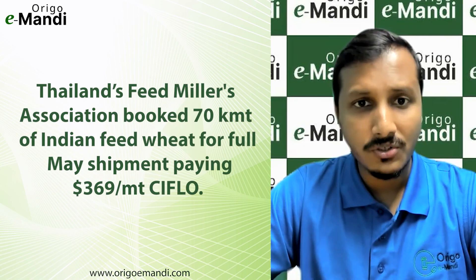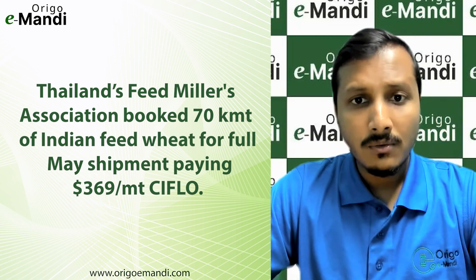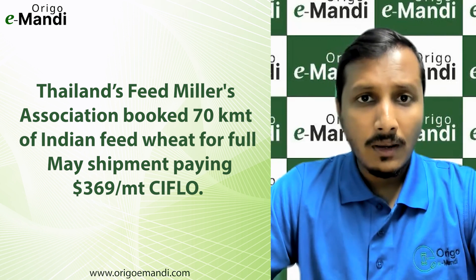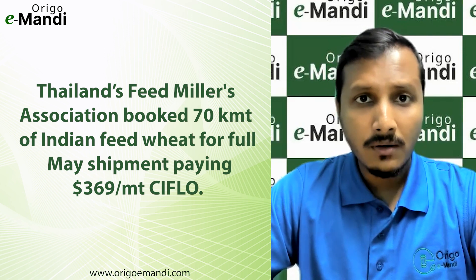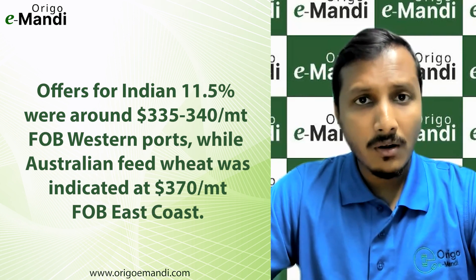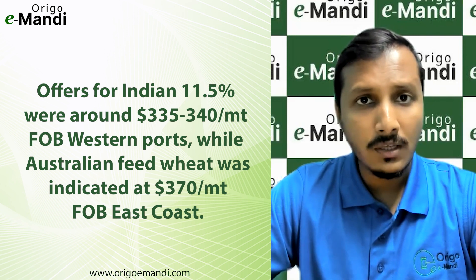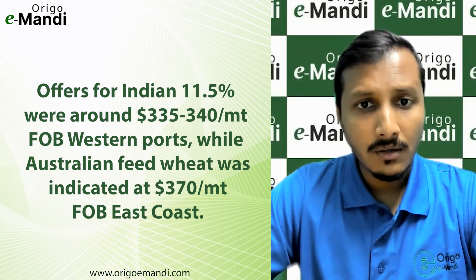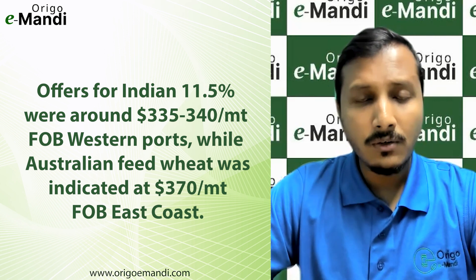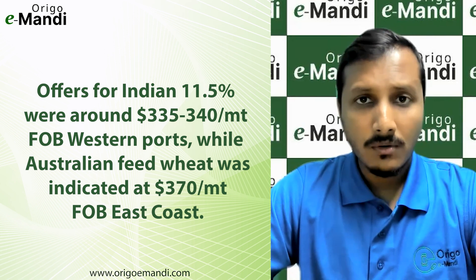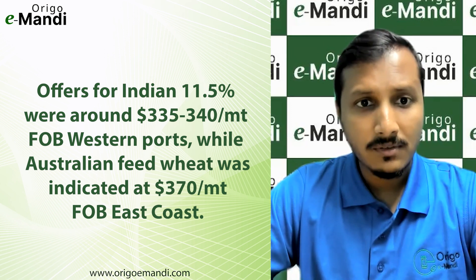The Thailand Feed Millers Association has booked 70,000 metric tons of Indian wheat for May shipment at a CIF price of 369 USD per ton. Offers for Indian 11.5 percent protein wheat were around 335 to 340 USD per metric ton at western coast ports, while Australian feed wheat price is around 370 US dollars per ton.